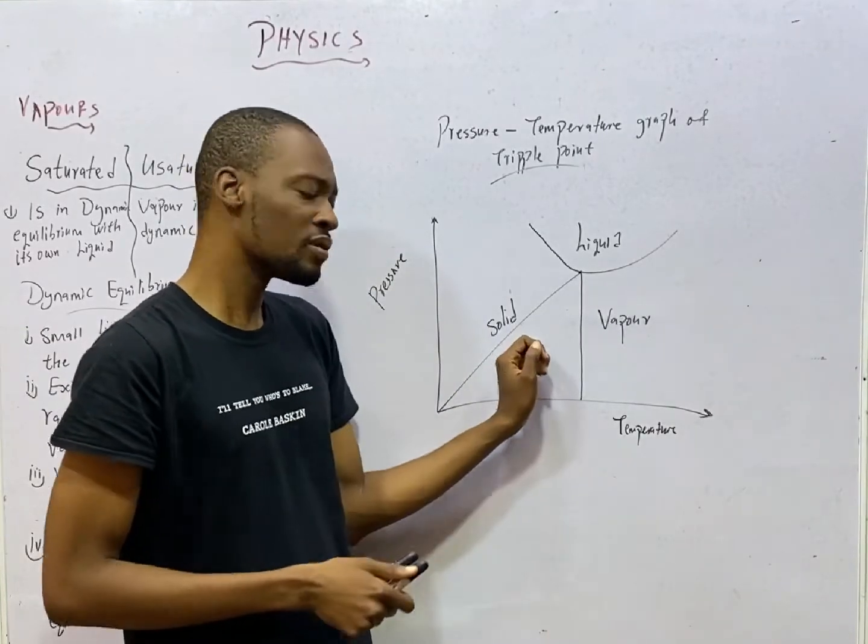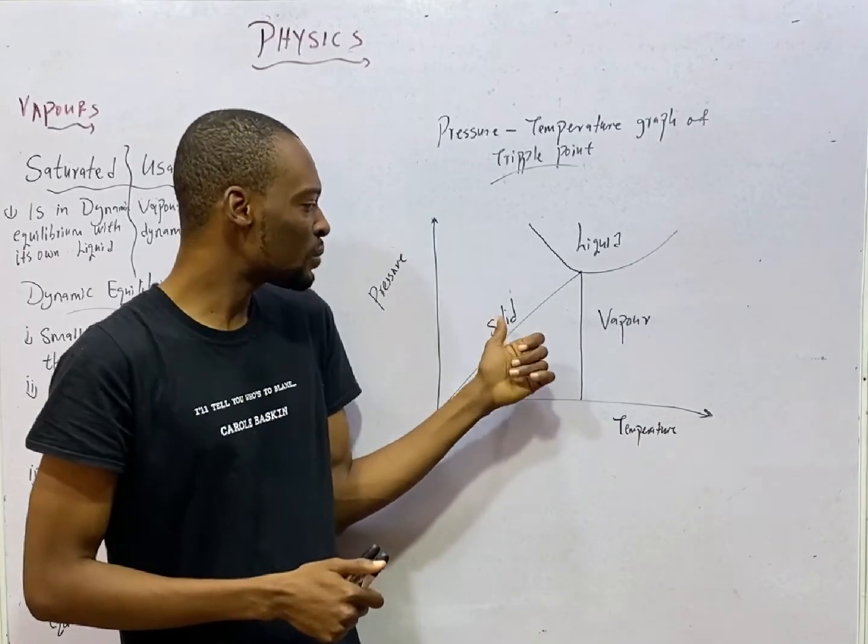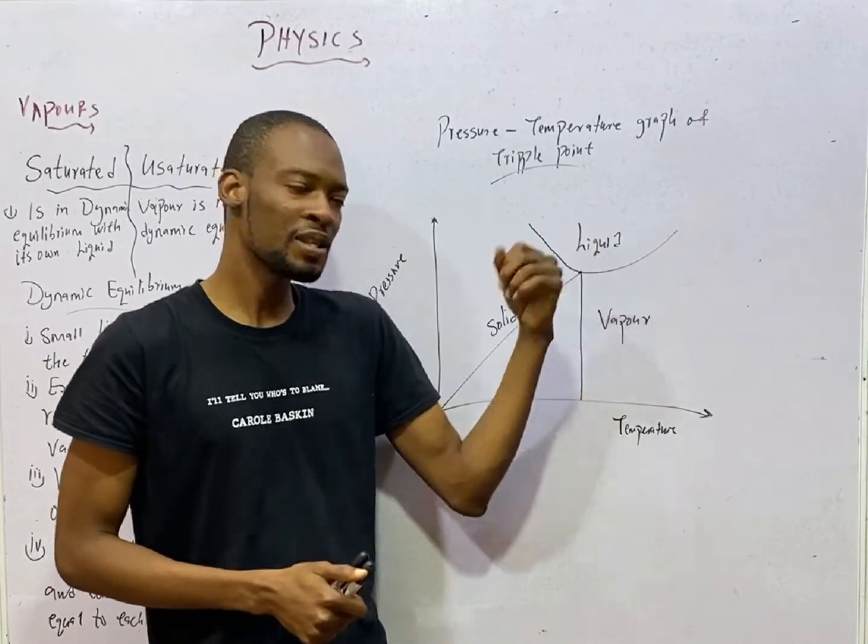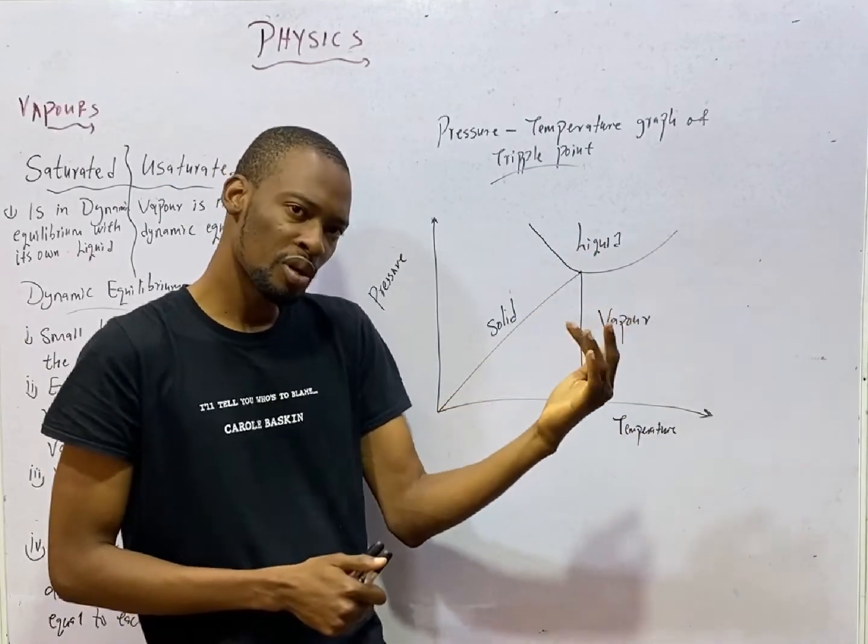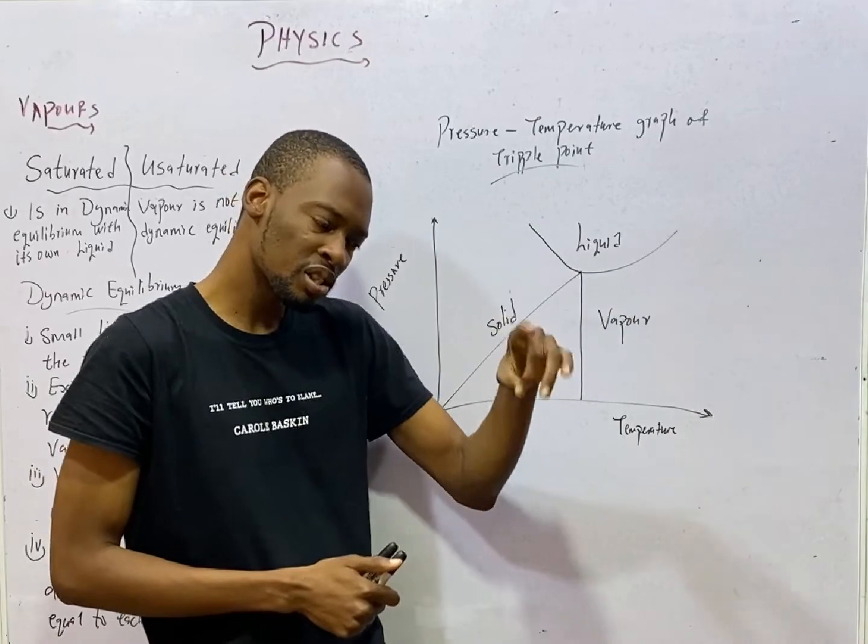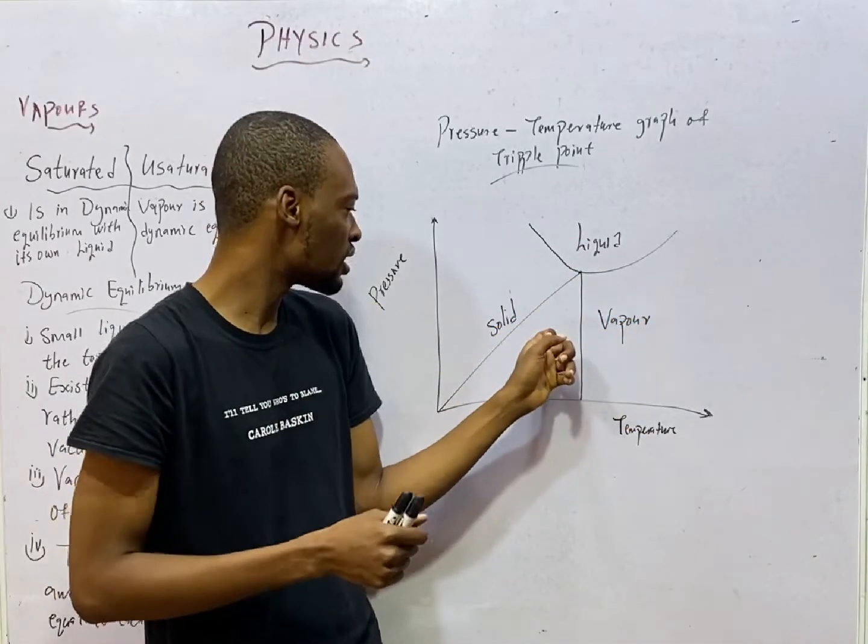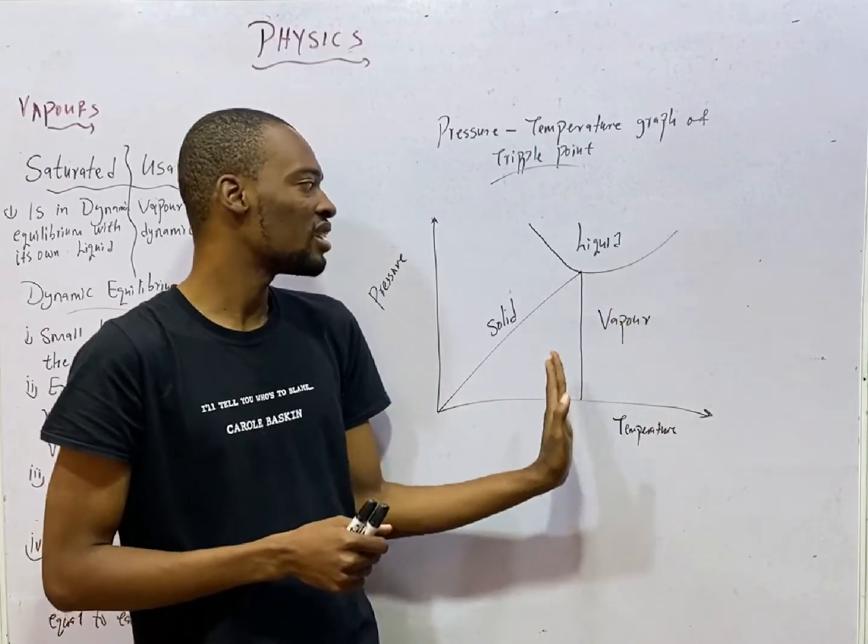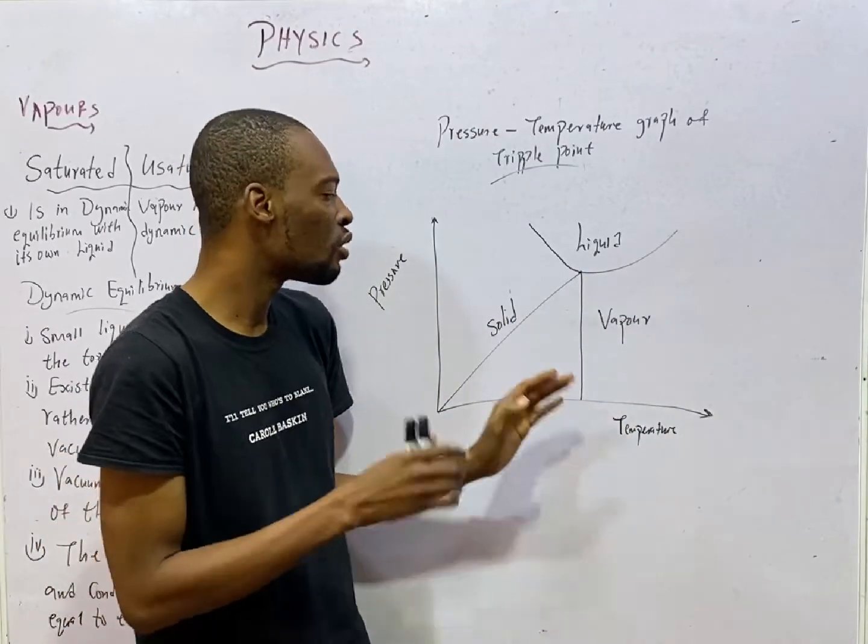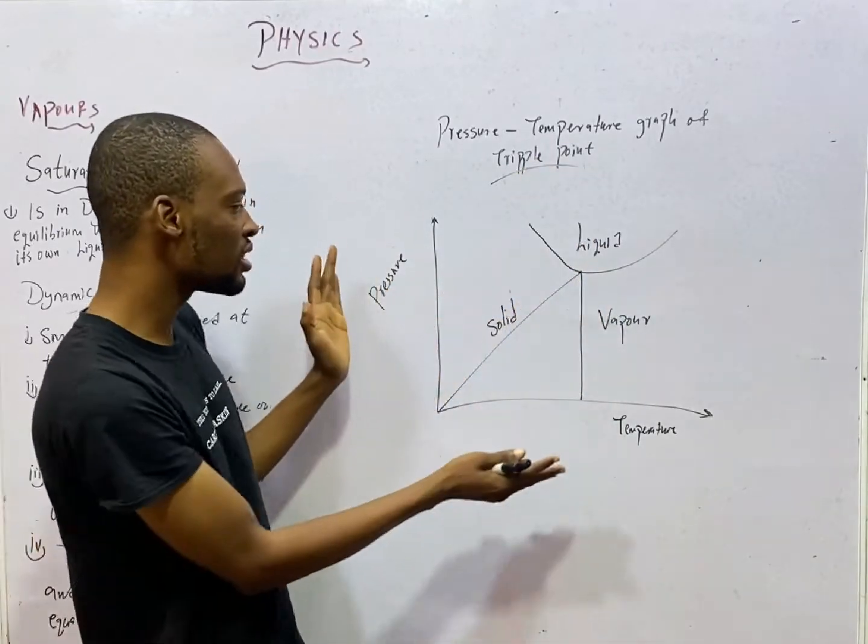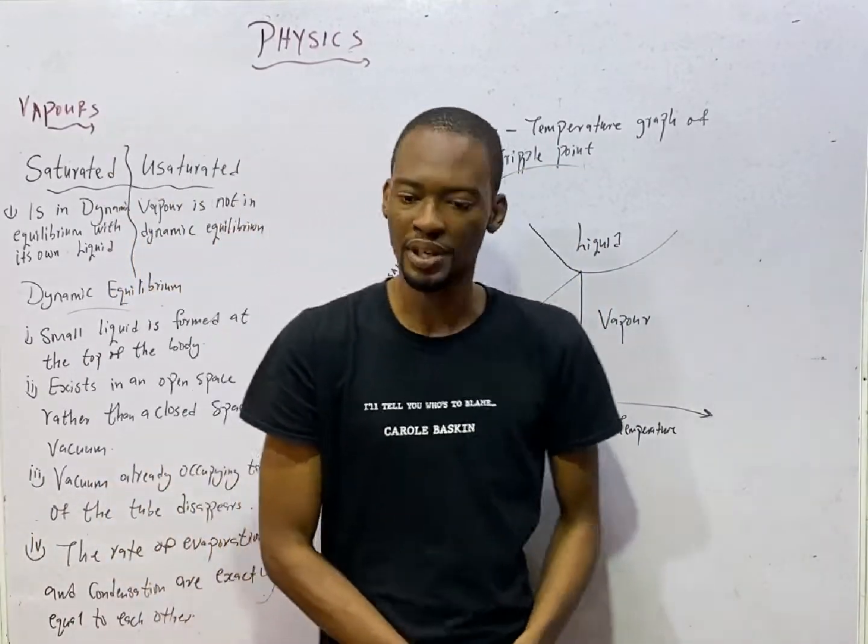Triple point is the point at which matter exists together as solid, as liquid, and vapor or gaseous state. If I give you an ice block, that ice block can be melting which means liquid is present. At the same time, you see water vapor coming out. So these three states can actually coexist. So this is the graph of triple point.